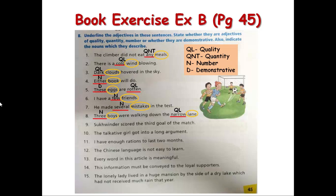Number 9: 'Quindar scored the third goal of the match.' The third goal — remember ordinals. Whenever you have the order of something, it falls under adjective of number. So 'third' is the adjective for the noun 'goal'. We circle 'goal' and write N on top of 'third' because it is telling you about the order of the goal.